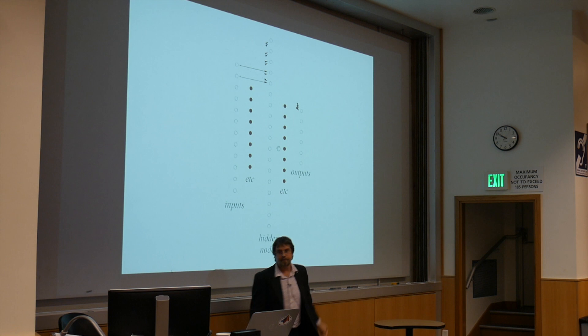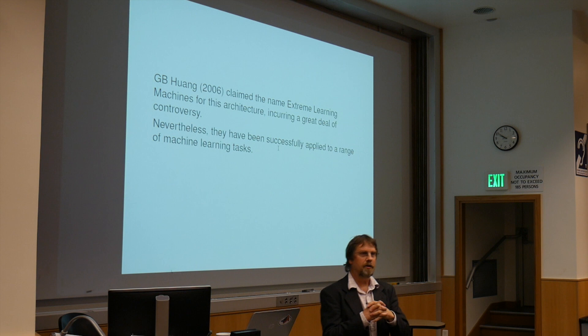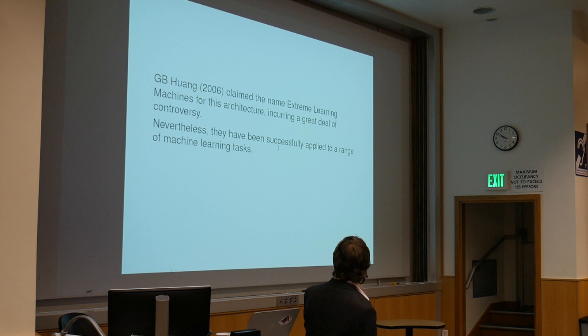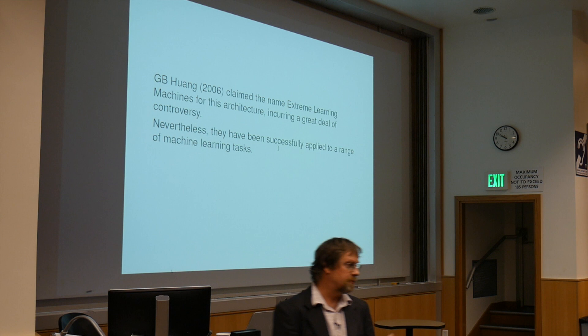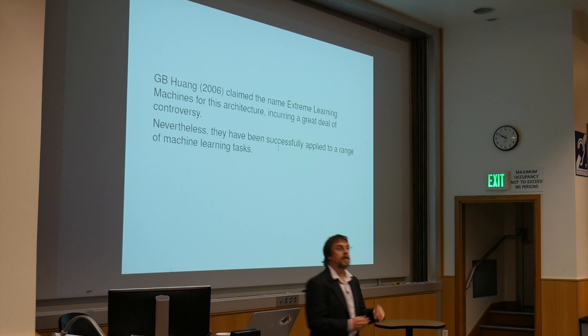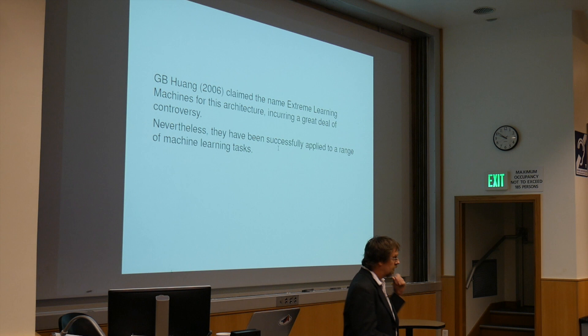These were created, marketed, named by this guy G.B. Hwang at National Technical University in Singapore. He claimed the name extreme learning machine to create a lot of controversy because people said there's nothing new here. But they have nevertheless been applied to a range of machine learning tasks and found to be reasonably successful. I'm not going to claim any special properties for them, except that they are very, very fast to train, because all you're doing is solving a least squares problem.